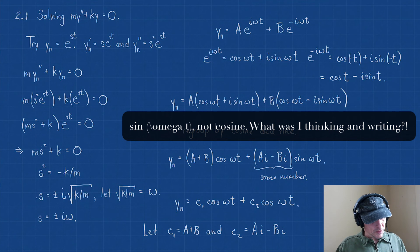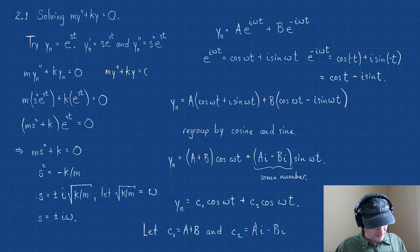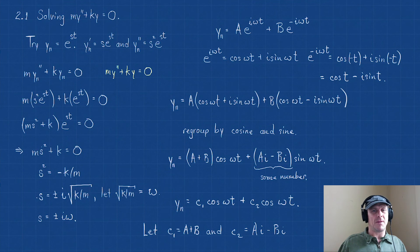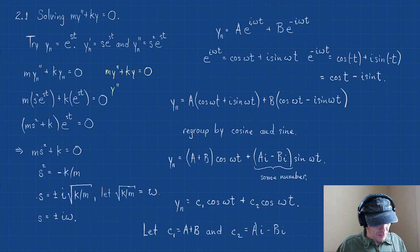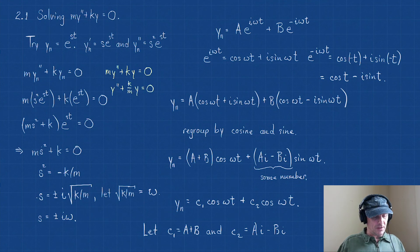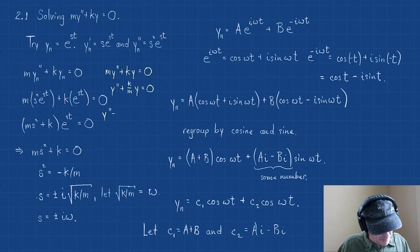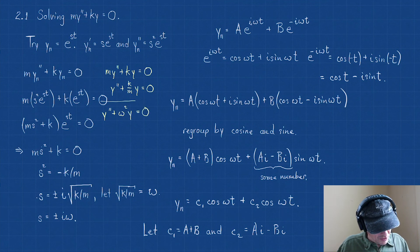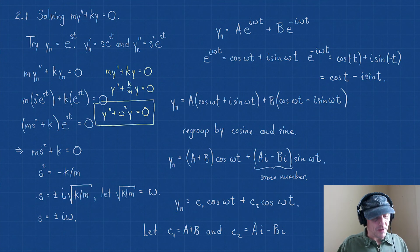There's one last piece that I think we need to see. Where we started: we started with m·y'' + k·y = 0. Now we know that the mass has to be something non-zero. So I'm going to divide by m and I have y'' + (k/m)·y = 0. But we said that ω = √(k/m), so k/m = ω². So y'' + ω²·y = 0. And it's usually this form of the equation that we write and address.